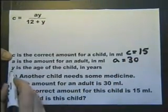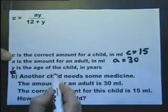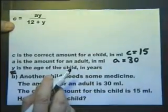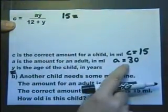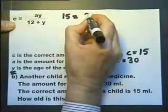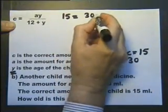How old is the child? So we've actually got to work out what Y is. So in this formula, we know what C is, that's 15. We know what A is, that's 30. And we've got to work out the value of Y.